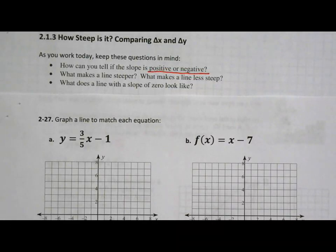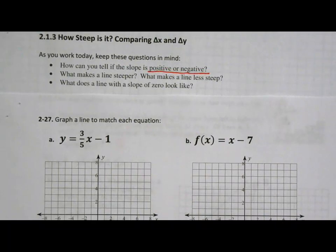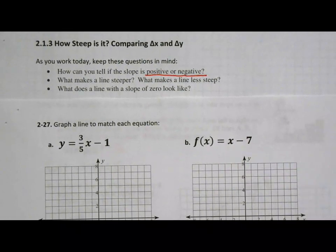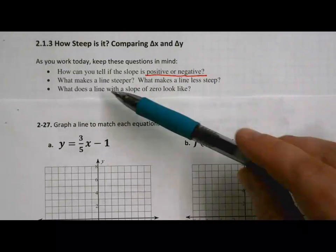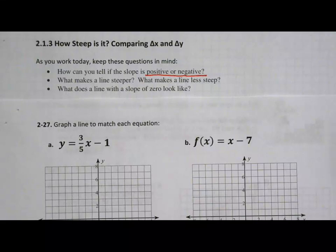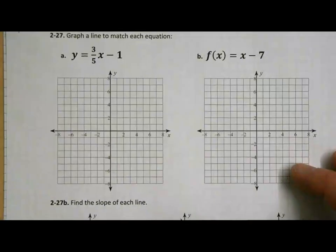We're still on section 2.1.3, and we're going to go over some examples — problems 27, parts A, B, and C, on this page here. Just to remind you of what we're looking at today: we want to think about slope, how you can tell if a slope is positive or negative, what makes a line steeper or less steep, and what a line with a slope of zero looks like. So let's go ahead and start working on these problems.